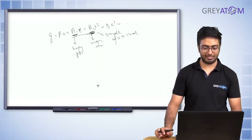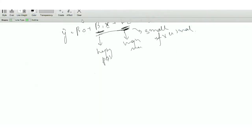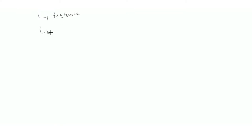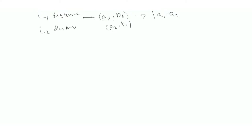One point to understand is why these are named L1 and L2. L1 is basically what's called L1 distance. So just for your knowledge: L1 distance is calculated when you're trying to measure the distance between two points — say (A1, B1) and (A2, B2). L1 distance is calculated as |A1 − A2| + |B1 − B2|.